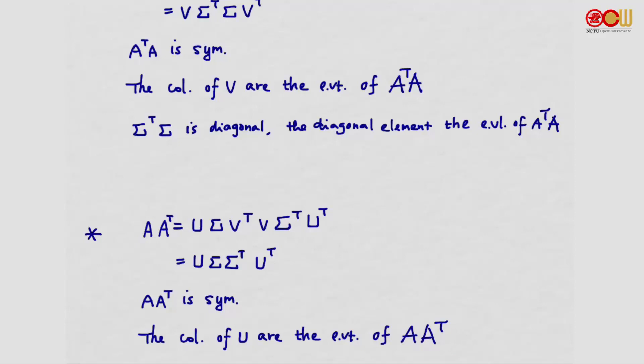This provides a means to compute U. We first compute the product A A-transpose, then find its eigenvectors, and then we can obtain U.